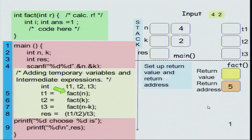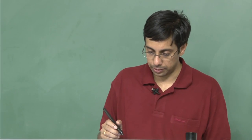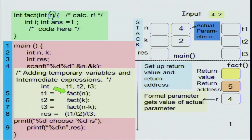First, when the program starts executing, you start with the first line of main. You scan n and k, so n is 4 and k is 2. Now you execute t1 = factorial(n). When factorial(n) is called, you set up the return value and return address. The return value is not yet decided; the return address is line 5 because you have to go back to line 5. You also copy the actual parameter value 4 to the input argument r. r is the input argument and should be assigned the value n, which is 4. This is known as passing the argument.